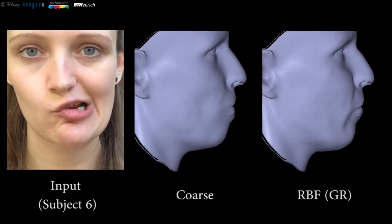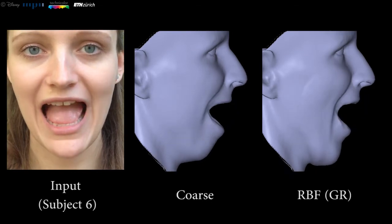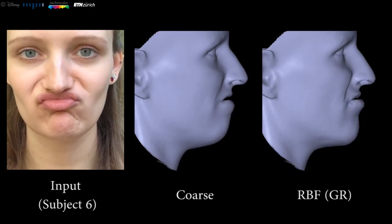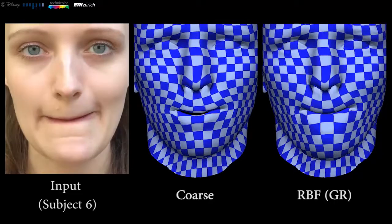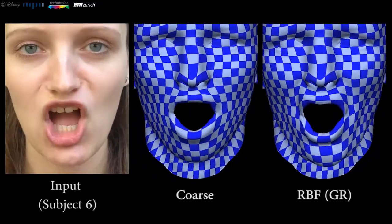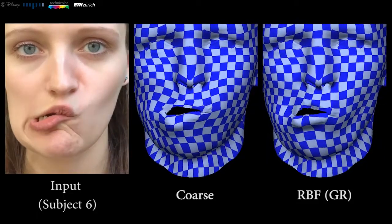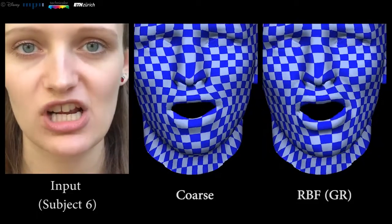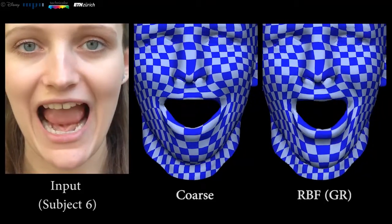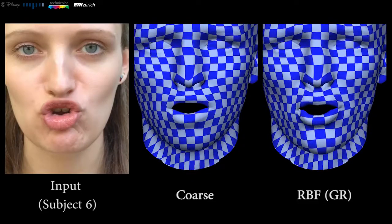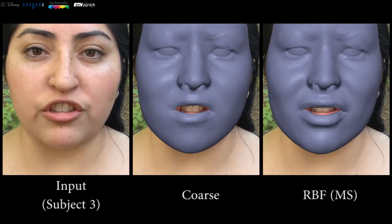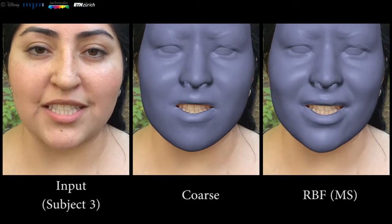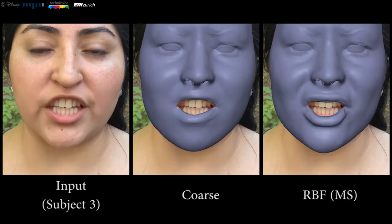Our approach also performs well under general illumination conditions. Here we reconstruct the video captured with an iPhone camera. Note, here we use the generalized regressor, which means the subject was not part of the training set. This checkerboard visualization shows that our approach successfully captures surface stretching. This is another outdoor sequence; the subject was part of the training set and we used the multiple subject regressor. We obtain higher quality results than state-of-the-art monocular reconstruction methods, especially for extreme deformations such as lip rolling in and out.